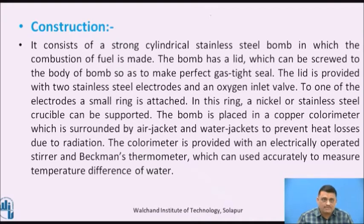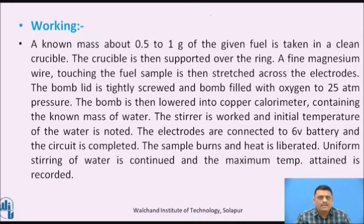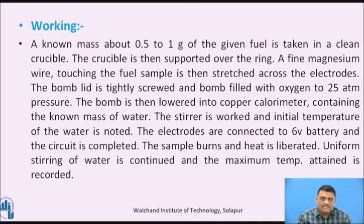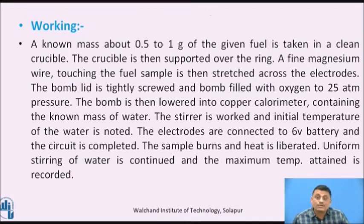During working, a known mass of 0.5 to 1 gram of the fuel is taken in a clean crucible. The crucible is then supported over the ring. A fine magnesium wire touching the fuel sample is stretched across the electrodes. The bomb lid is tightly screwed and the bomb is filled with oxygen. The bomb is then lowered into the copper calorimeter filled with water. The stirrer is set working and the initial temperature of the water is noted. The electrodes are then connected to a 6-volt battery and the circuit is completed. When current passes from the battery through the electrodes, it enters the magnesium wire. The wire gets red-hot, and due to that rise in temperature, the fuel catches fire, undergoes ignition, produces heat, and that heat is absorbed by the surrounding water.